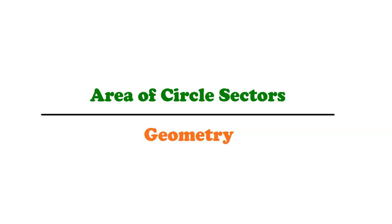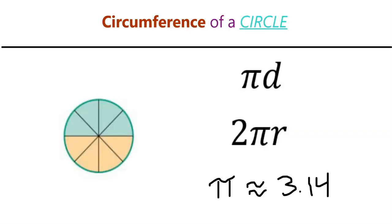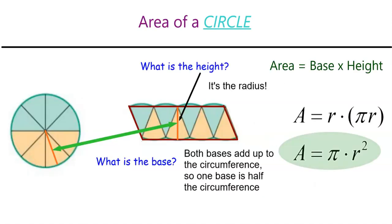As a quick reminder, the circumference formula for a circle is pi times the diameter, or 2 pi r, where pi is the constant 3.14, often abbreviated just to 3.14, and the area formula is pi r squared.